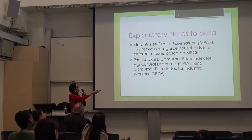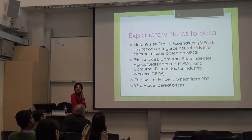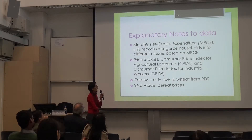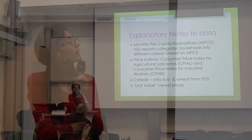For those of you unfamiliar with Indian data, you'll see in all the tables a term called monthly per capita expenditure, or MPCE. The NSS reports categorize households on this basis, with MPCE being used as a proxy for real income throughout. I've used the standard price indices used for poor rural and urban households in India — the CPIAL for rural households, the consumer price index for agricultural laborers, and the CPIIW for urban households. For the cereals from the PDS, I've only considered rice and wheat, so my calculation would possibly underestimate the real transfer from the PDS to a certain extent.